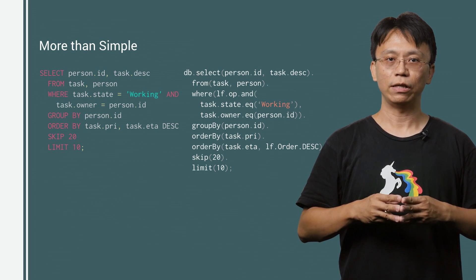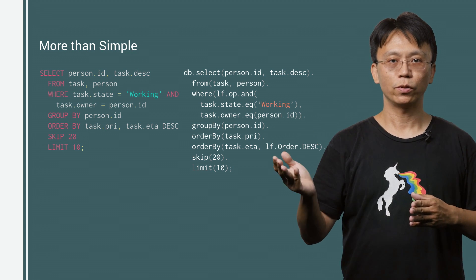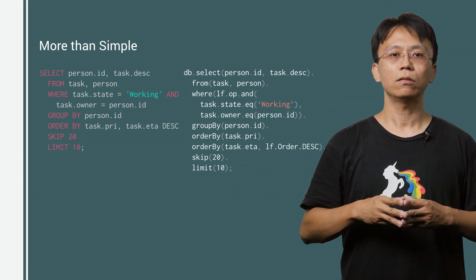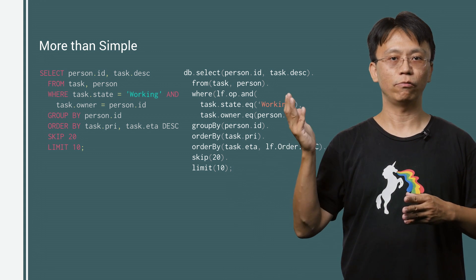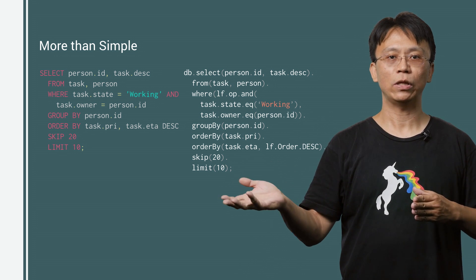Lovefield can do more than just simple queries. It has some great functionalities such as group by, advanced sorting, pagination using limit and skip, and so on. The code snippet here demonstrates how to group results, sort the results by multiple columns, and implementing pagination using limit and skip.